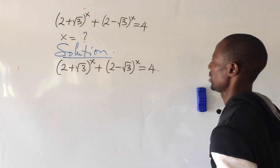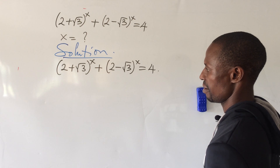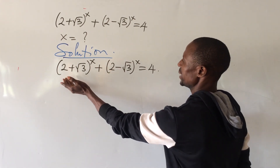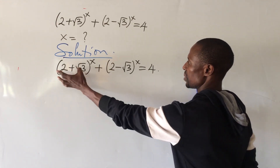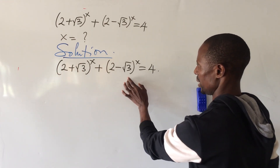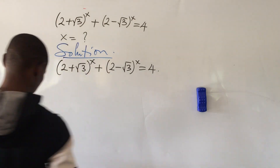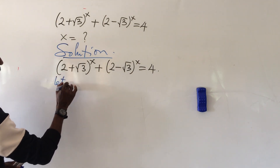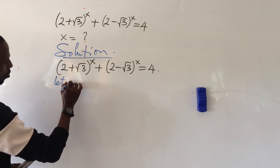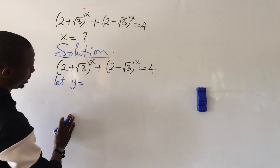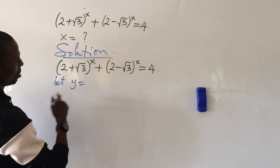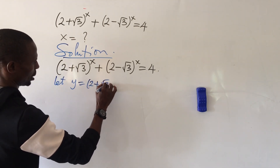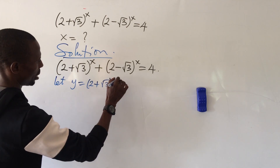This is special. What do we do here? From here we are bringing another variable to represent the expressions. In that regard, let y equal to bracket (2 + √3) close bracket to the power of x.